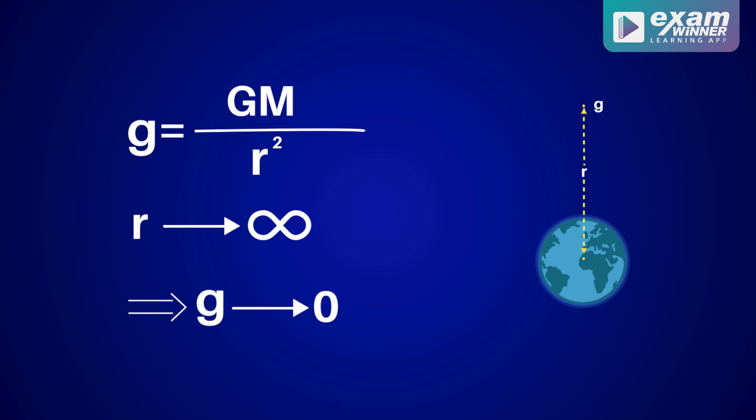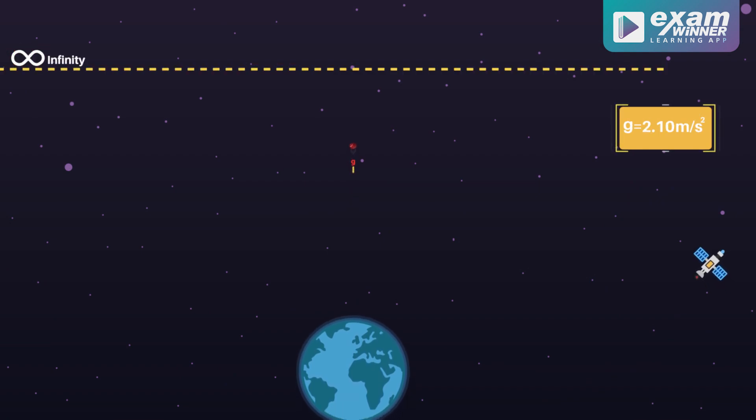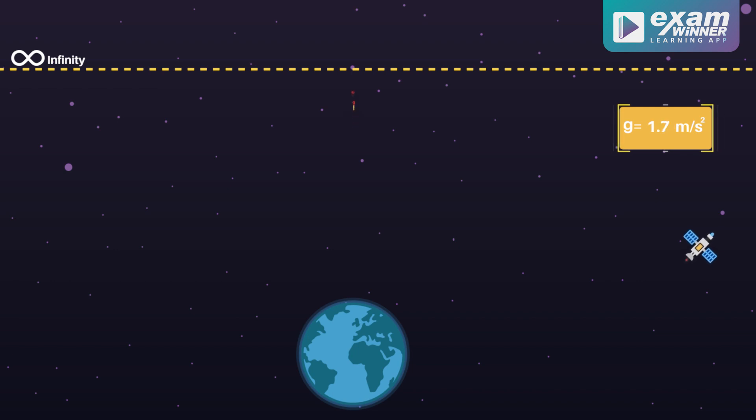In the denominator, as r becomes infinity the value becomes zero. That is why we have to move the ball to infinity. The ball is traveling and traveling until it reaches infinity. At infinity, the velocity is zero. We took that minimum velocity needed — that is escape velocity.